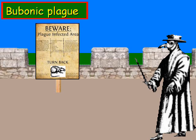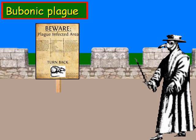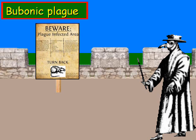The bubonic plague is probably best known for the Black Death that occurred in the late Middle Ages, around 1300 to 1400, which was responsible for wiping out about a third of the population of Europe at the time.